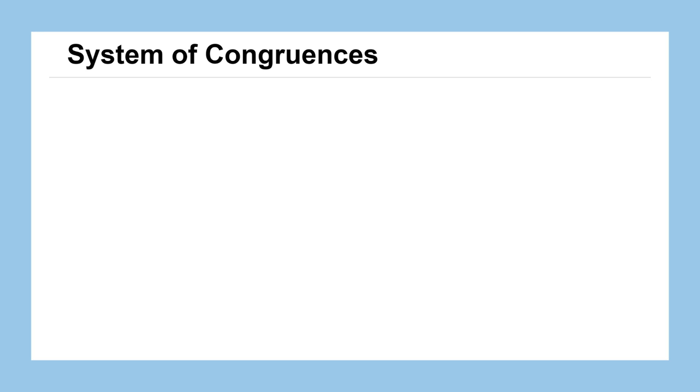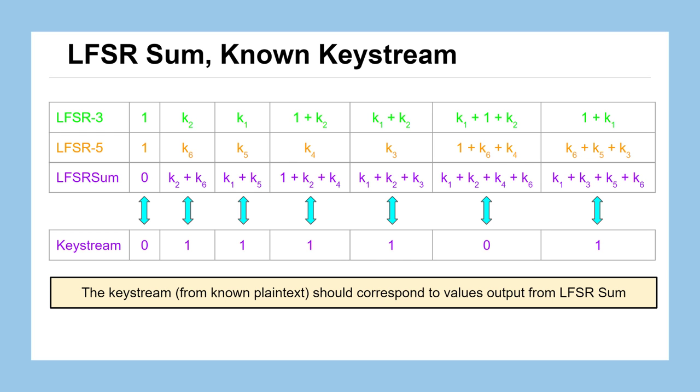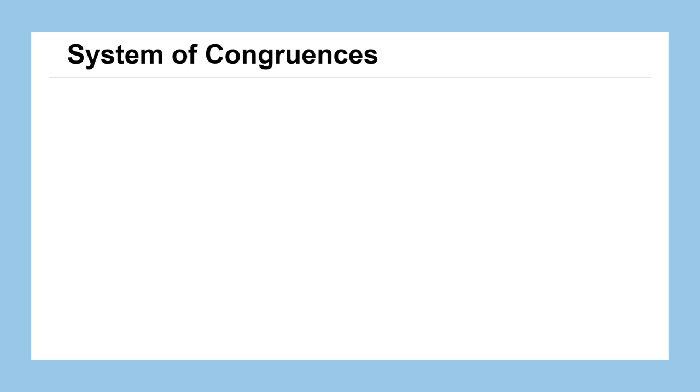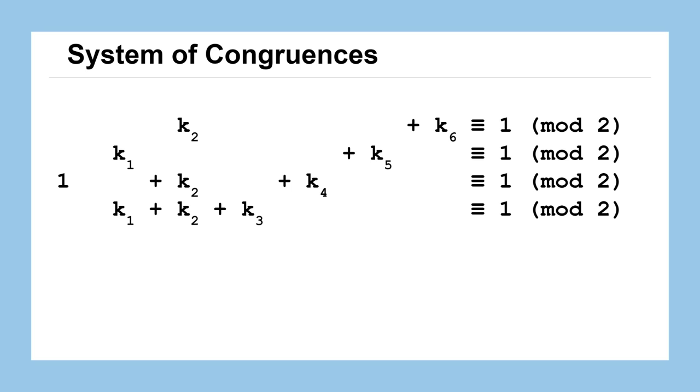We can use all of those correspondences to set up what's called a system of congruences. It's like a system of equations, but just in a particular modulus. For example, I would know that k2 plus k6 is congruent to 1 in mod 2. How did I know that? It's because bit 1 is k2 plus k6 from the computed LFSR sum system, and I have a computed keystream value of 1, so I know that those should be congruent. We can set up similar congruences for the remaining bits.